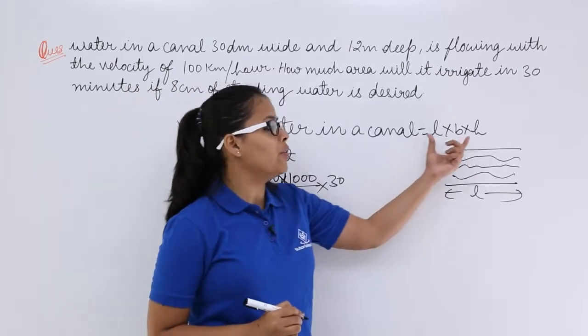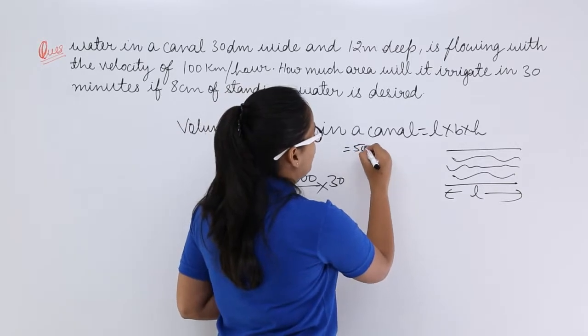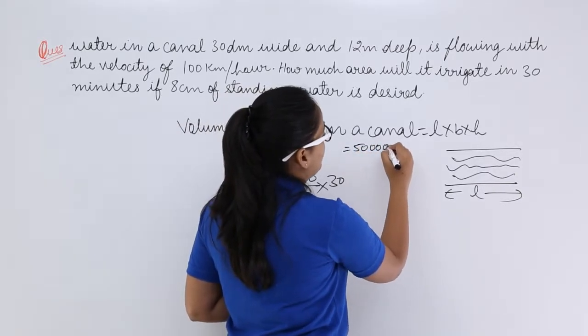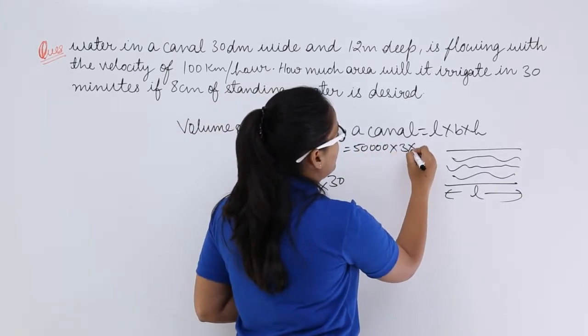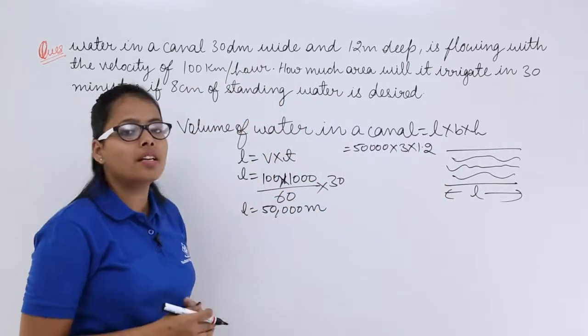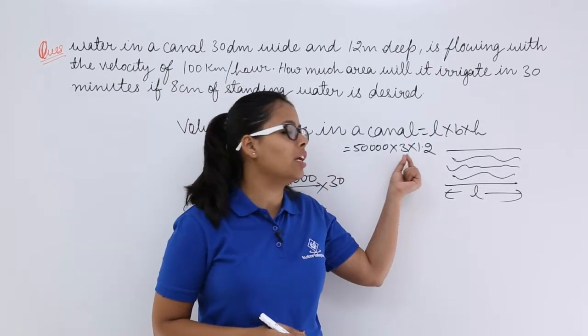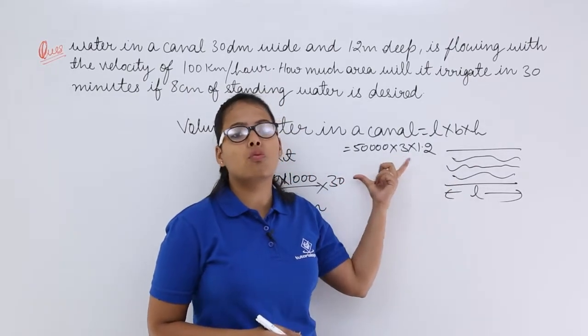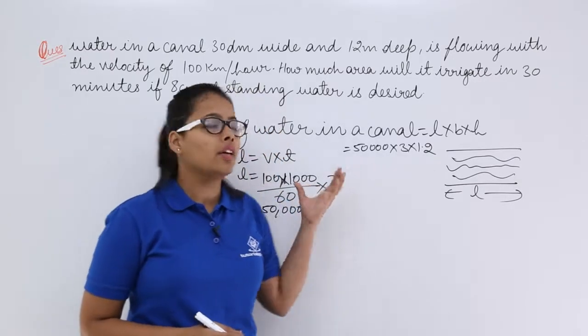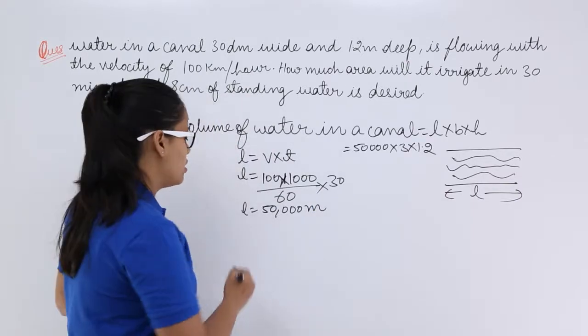Now let's use this value here in this expression. What you will get? 50,000 into 3 meter into 1.2 because you know that this wideness is in decimeter. So when you multiply the 30 with 0.1 you will get 3 meter into 1.2. So this is the volume of the water you will be using to irrigate the field.